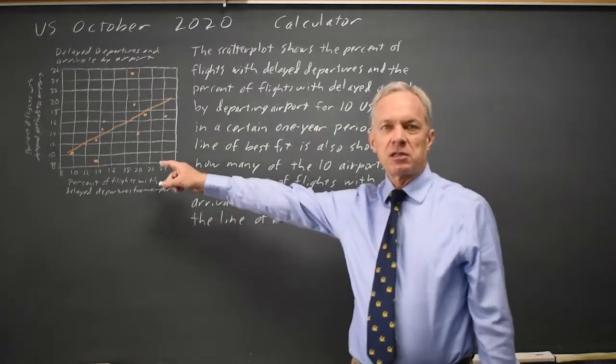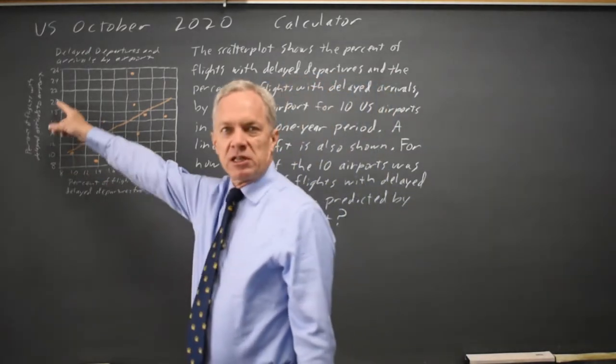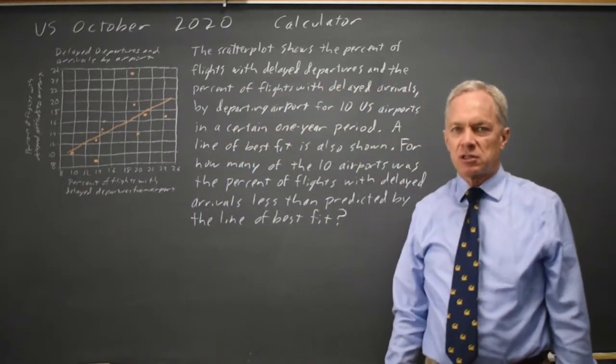College Board gives us a scatter plot with delayed departures from an airport and delayed arrivals to the airport on the two axes and a line of best fit along with ten points.